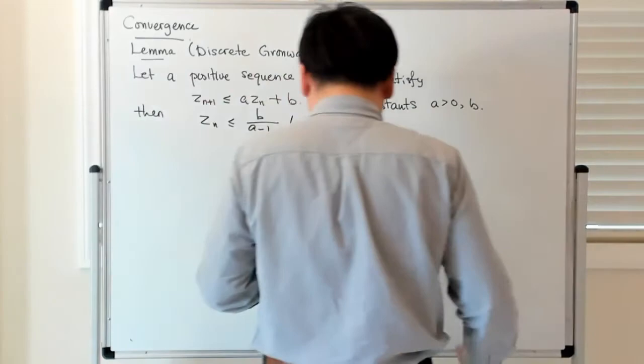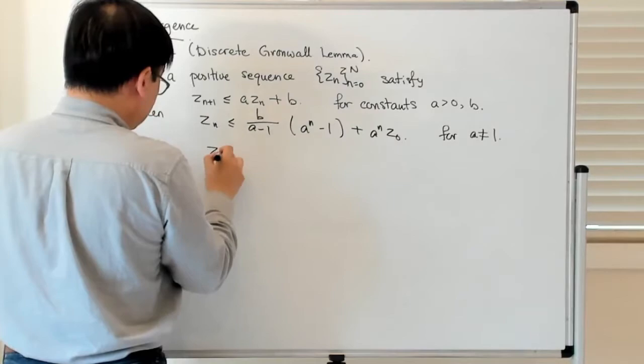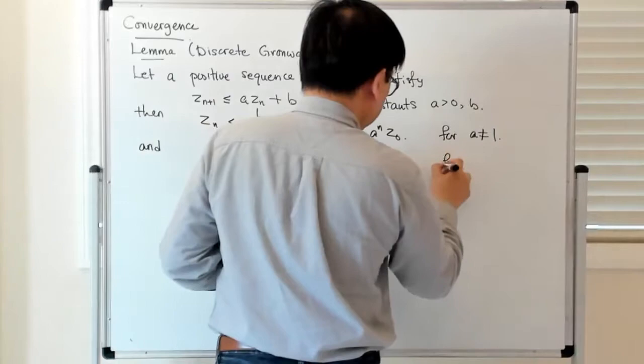This is the condition which holds if A is not equal to 1. If A is equal to 1, then life is a lot easier. Then this is less than or equal to NB plus Z_0, again for A equals 1.